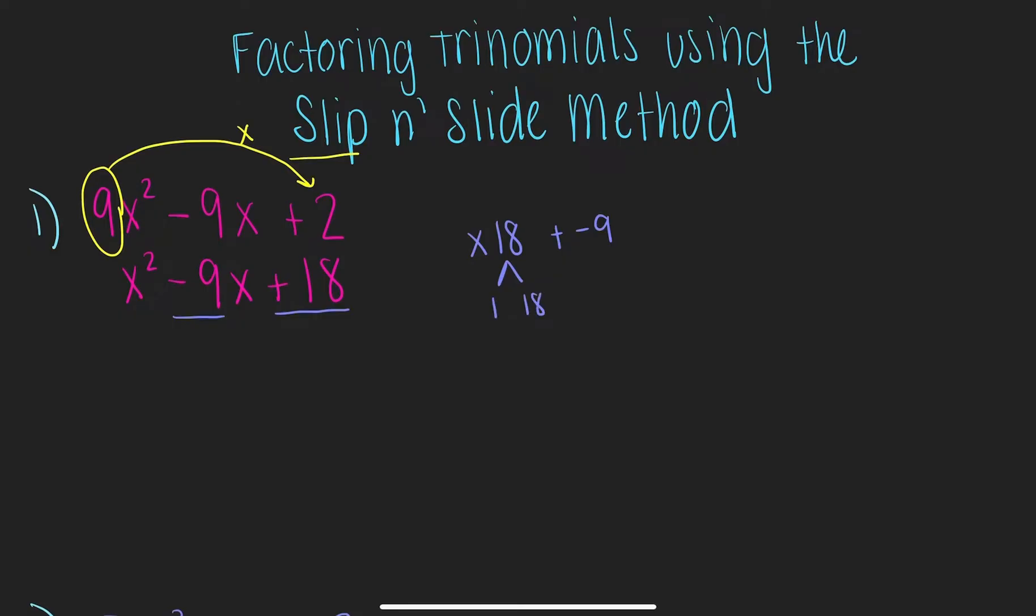1 times 18 is 18, 2 times 9 is 18, and 3 times 6 is 18. So, we need to figure out which of these two numbers could I add to get negative 9. We'll have to play with some signs here.